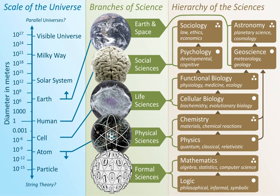Earth science, also known as geoscience or the Earth sciences, is an all-embracing term for the sciences related to the planet Earth. It is arguably a special case in planetary science, the Earth being the only known life-bearing planet. There are both reductionist and holistic approaches to Earth sciences. The formal discipline of Earth sciences may include the study of the atmosphere, hydrosphere, oceans and biosphere, as well as the solid Earth. Typically Earth scientists will use tools from physics, chemistry, biology, geography, chronology and mathematics to build a quantitative understanding of how the Earth system works and how it evolved to its current state.